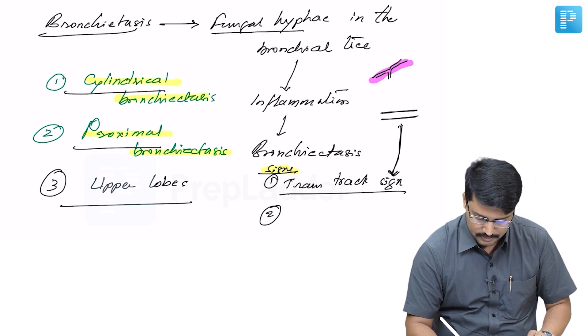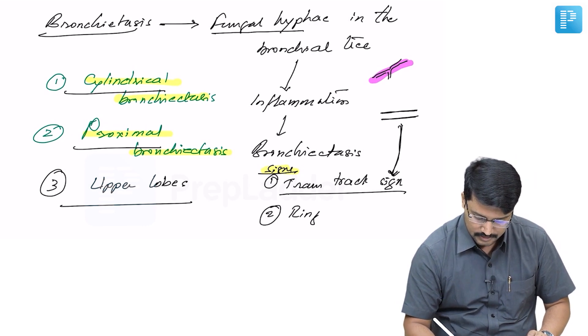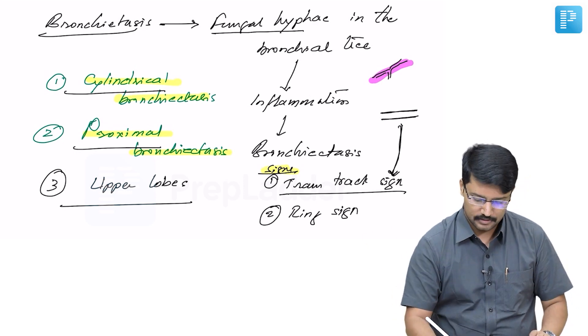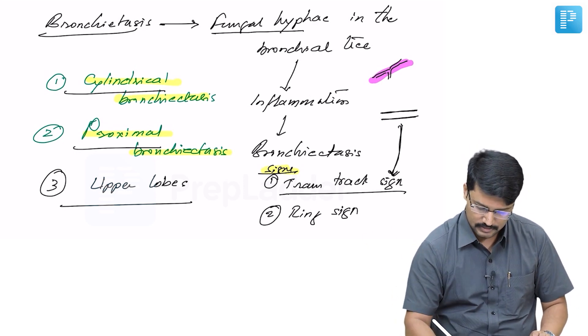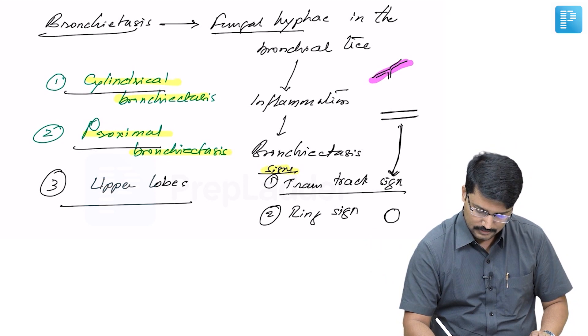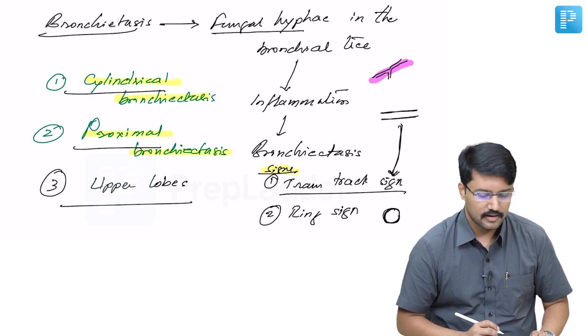Another sign is the ring sign, which is a coronal section taken through the bronchus. This is what we call the ring sign.